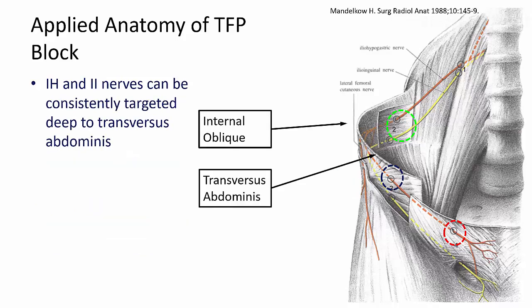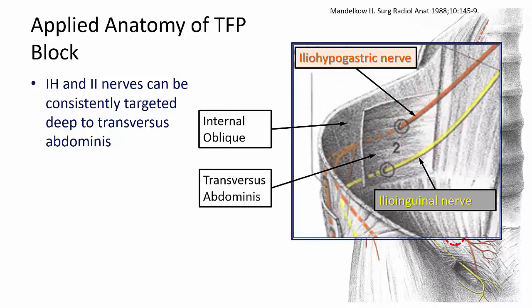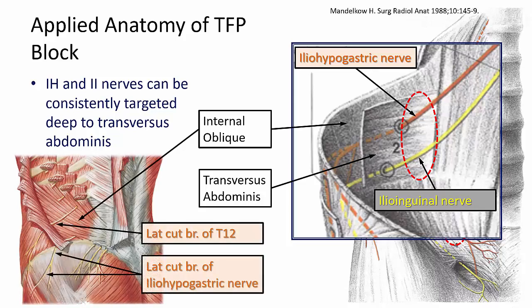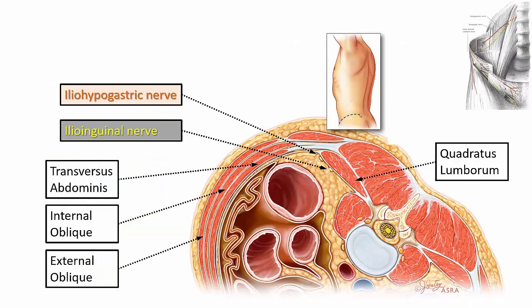In the TFP block, the nerves can be consistently targeted where they lie deep to transversus abdominis before they ascend into the TAP plane, and before they give off their lateral cutaneous branches and branches to the iliac crest. At this point, the nerves are sandwiched in a plane between the investing fascia of transversus abdominis and the transversalis fascia.